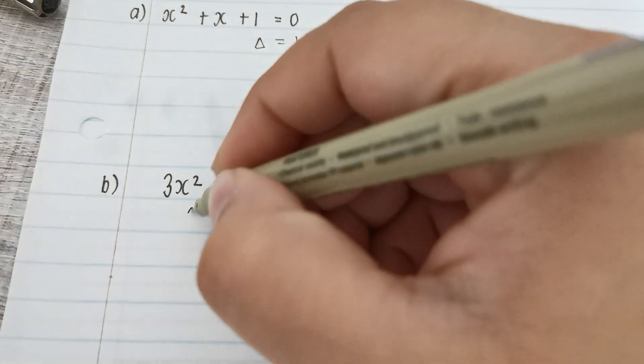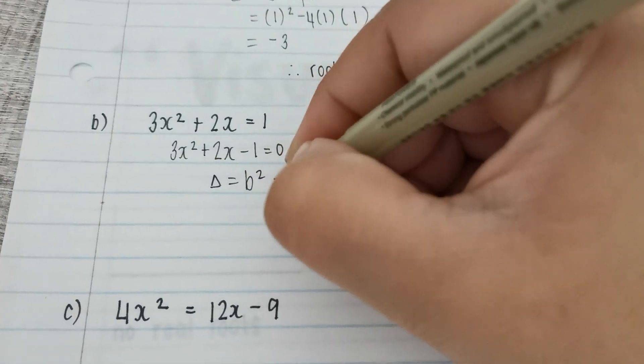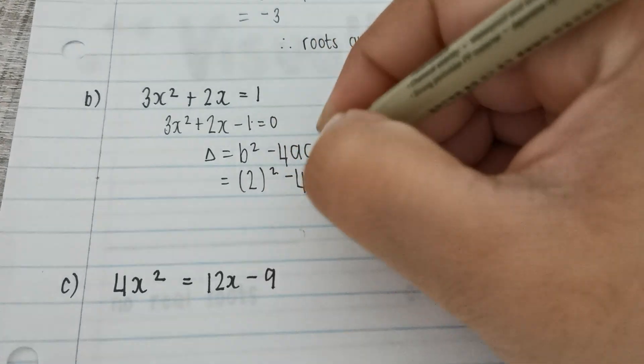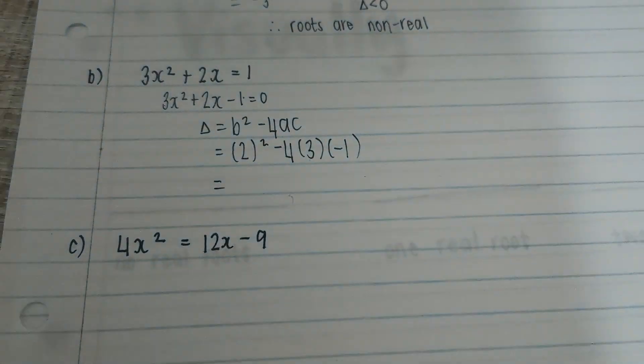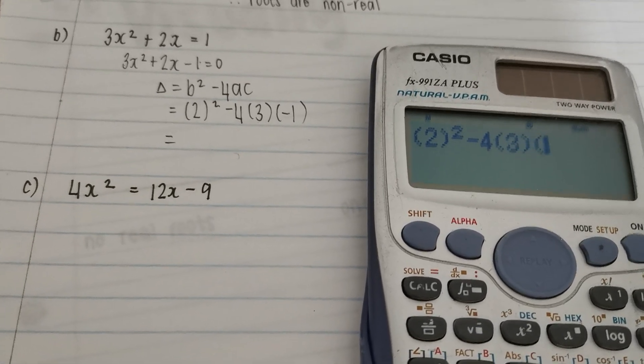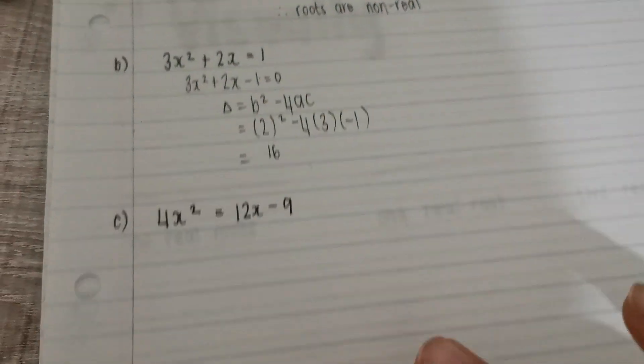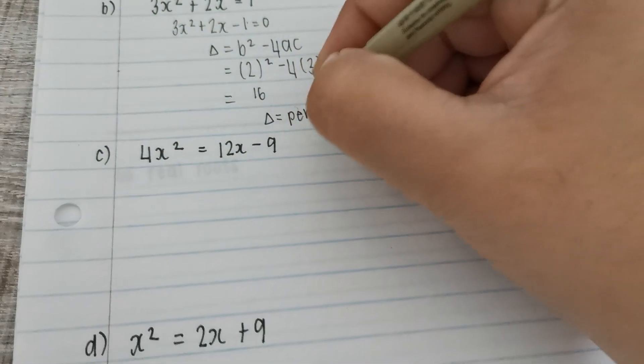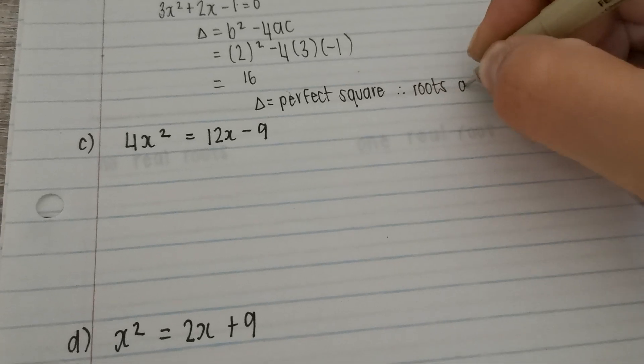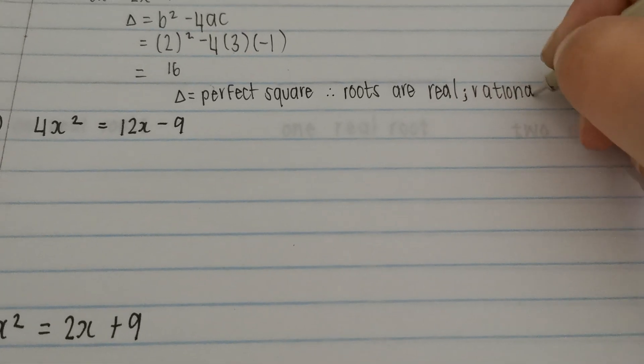Next one. I need to get it into standard form. Discriminant. b value, a value, c value. You see what type of number is 16? 16 is a perfect square. Roots are real, rational, and unequal.